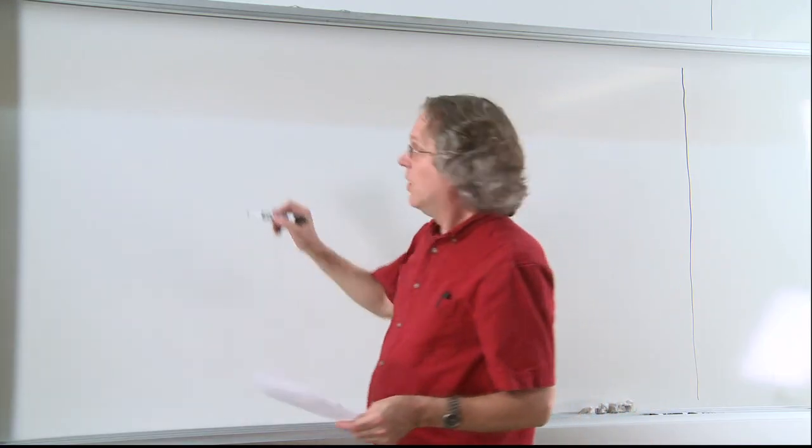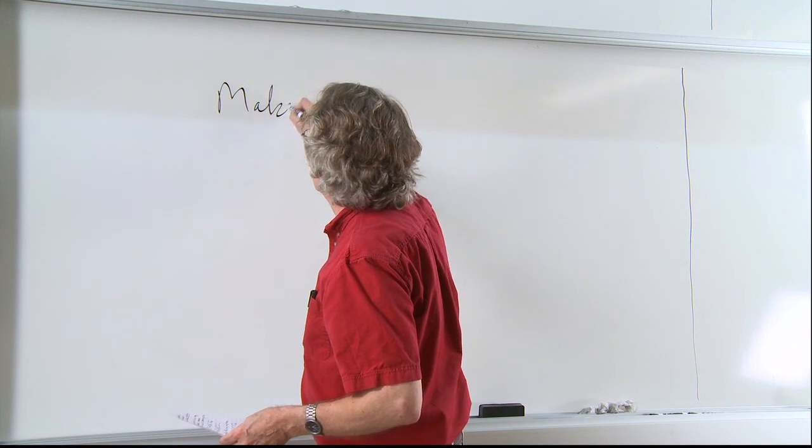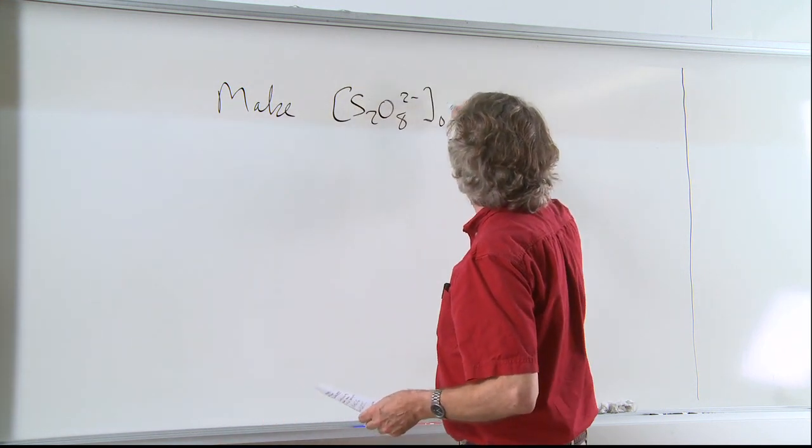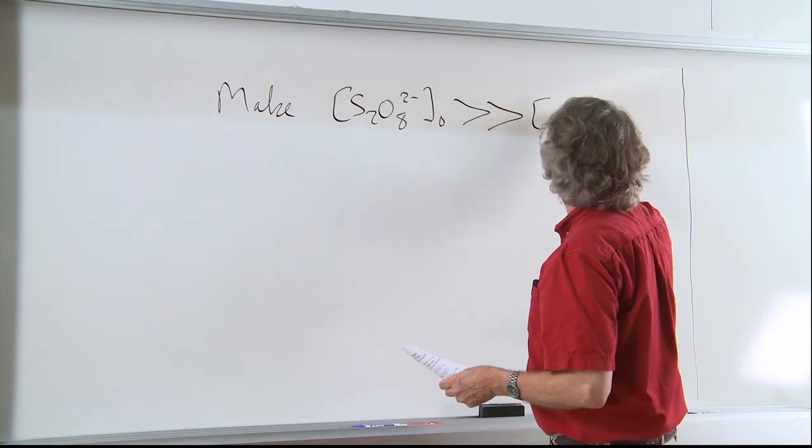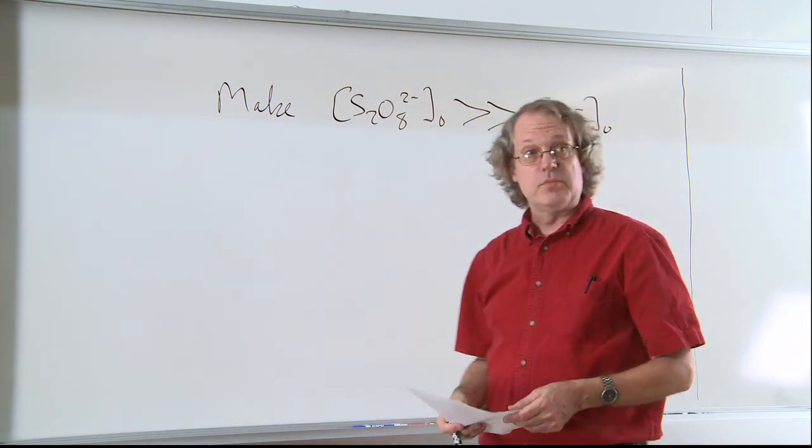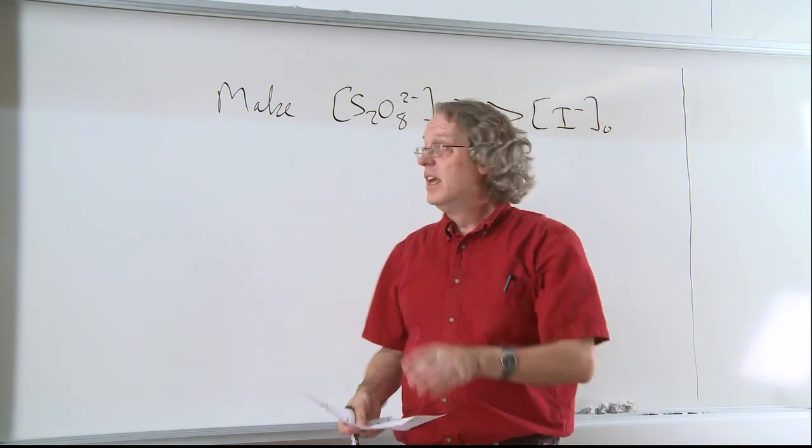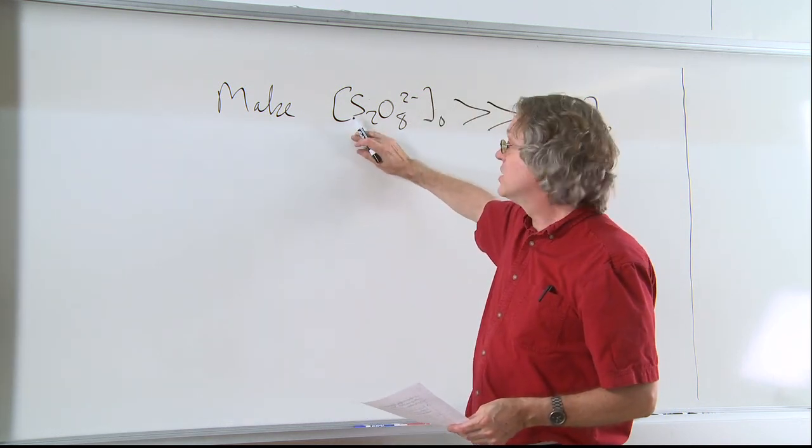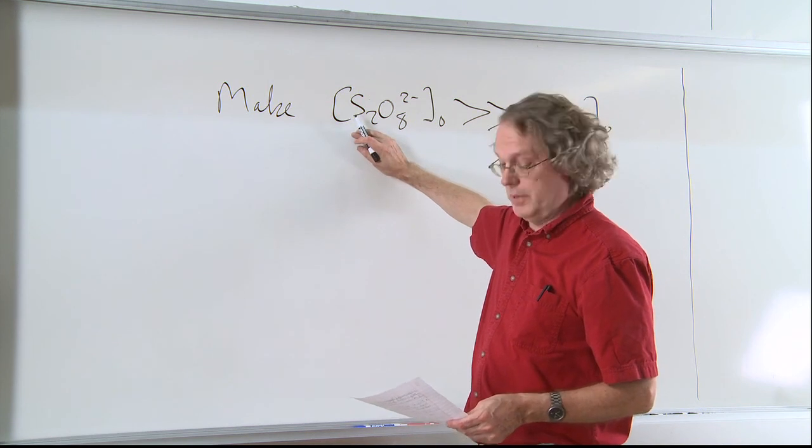Let's set our experiment up so that we make the initial concentration of peroxydisulfate ions much, much bigger than the iodide concentration. So as the iodide decays, it will take away some of the S2O8 2- minus, but this is not going to change much. There's an overwhelming amount of this.